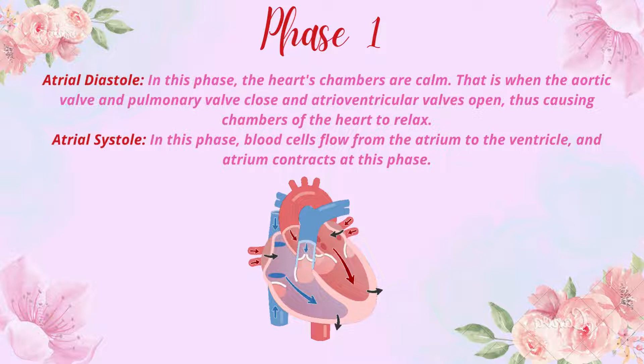Atrial systole means contraction. In this phase, blood flows from the atrium to the ventricle as the atrium contracts. Blood flow is allowed by the atrioventricular valves — the bicuspid and tricuspid. The bicuspid valve is between the left atrium and left ventricle, and the tricuspid valve is between the right atrium and right ventricle.